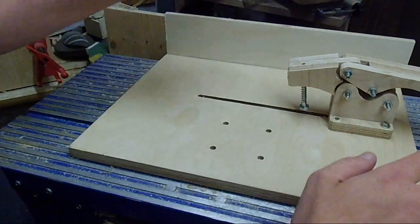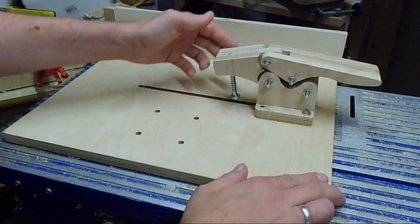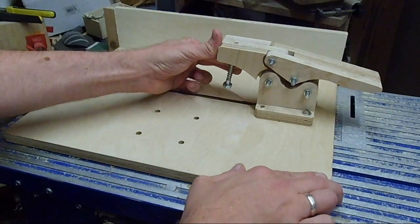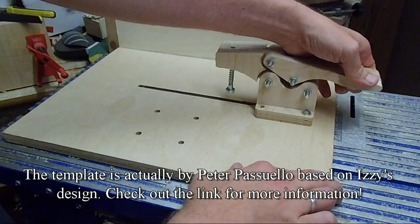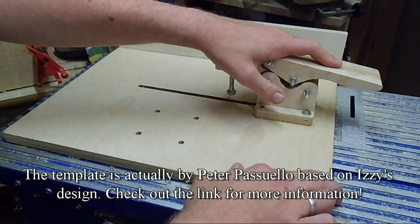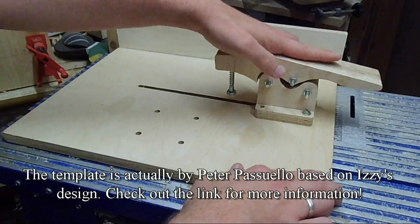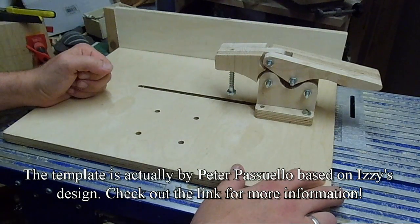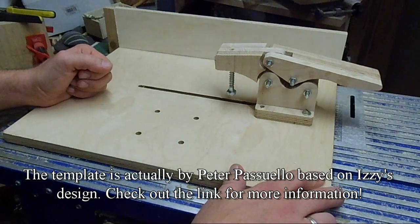But let's move on. Here I have a hold down device, a toggle clamp, Izzy Swan style. I got the design from a video of his. I'll put a link somewhere there. And you can easily download it, print it out.